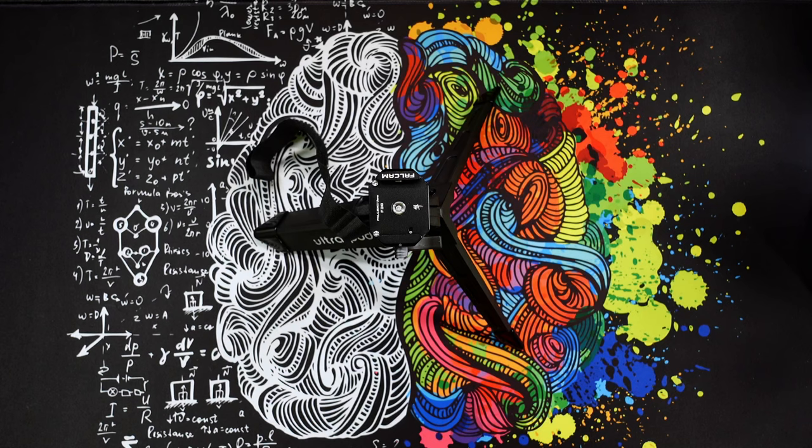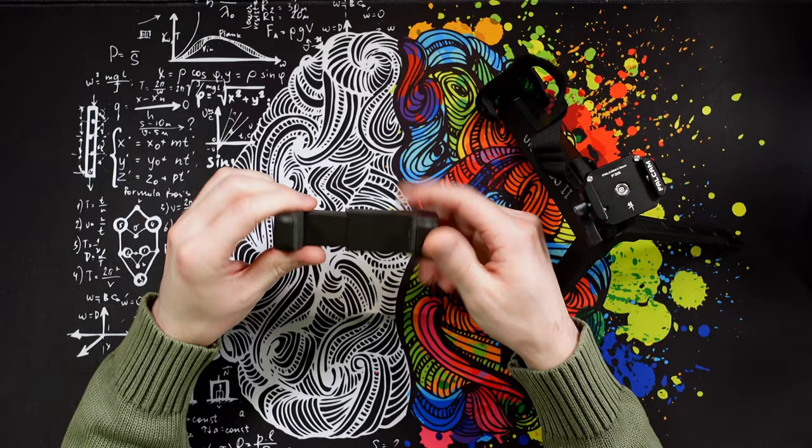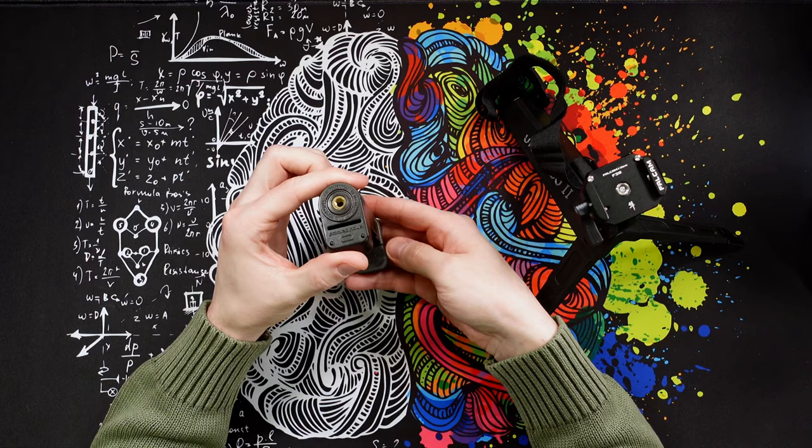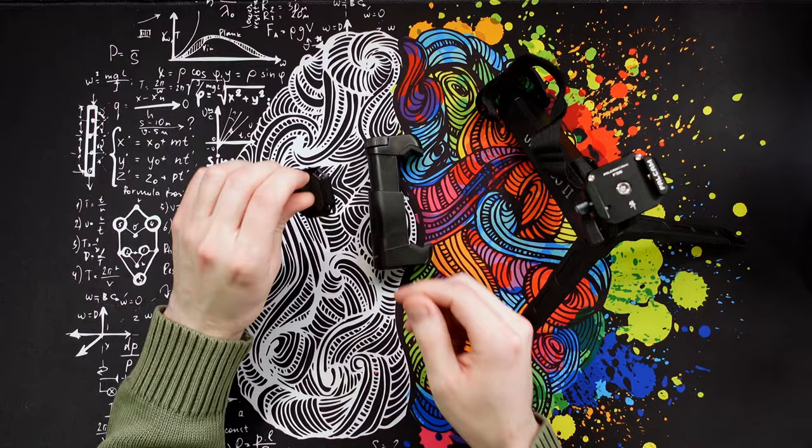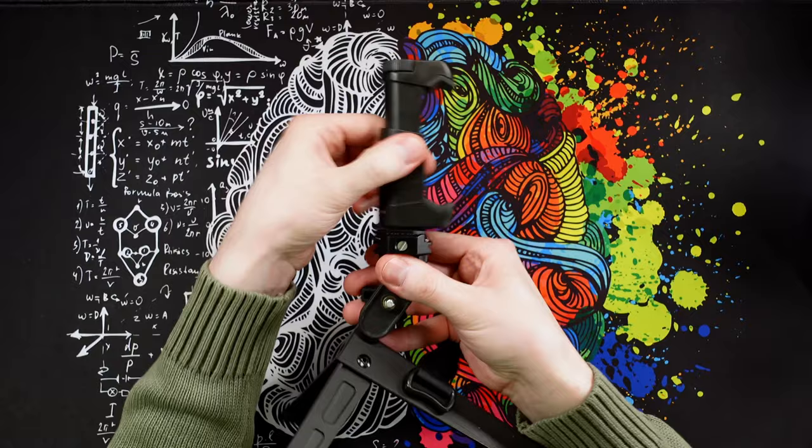So originally what I had for this tripod was this right here, which is just a simple clamp style phone holder. It actually has a pretty good range, holds the phone very well, just has a quarter 20 on the bottom. And I can still technically use that by using an ARCA Swiss compatible adapter plate.